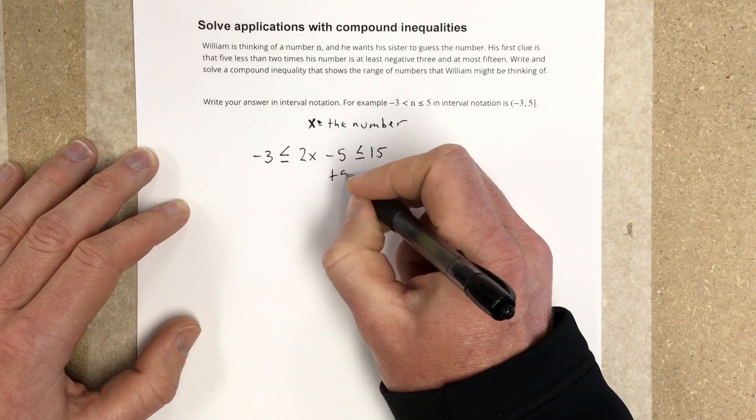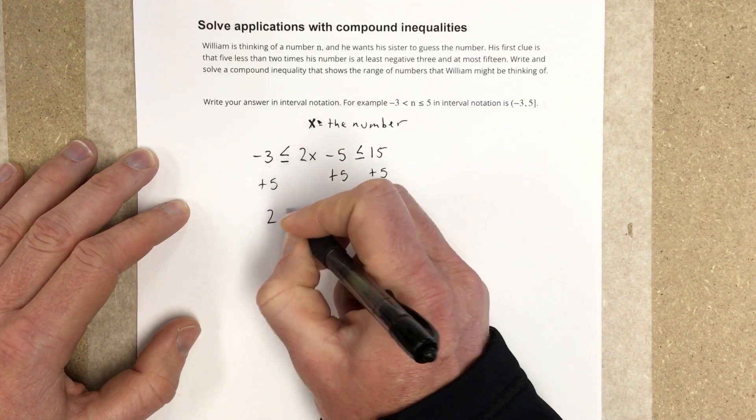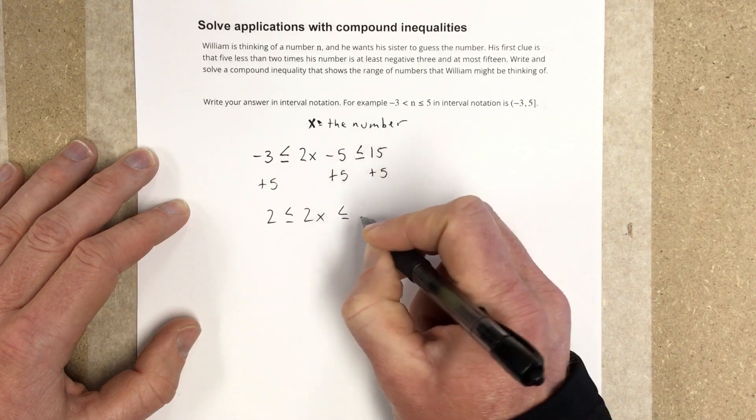Let's solve that by adding 5 to each side. We get 2 is less than or equal to 2x, which is less than or equal to 20.